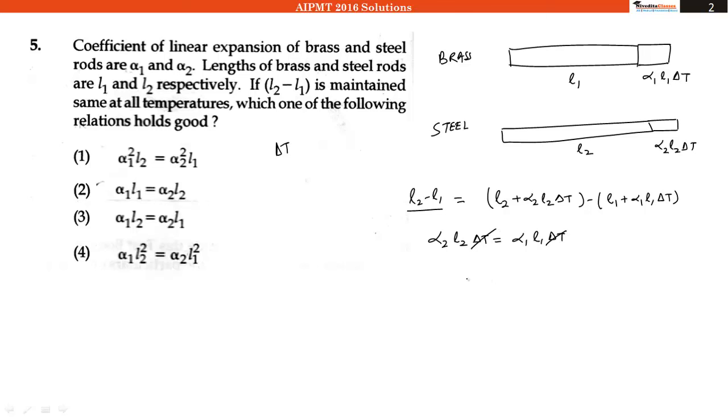And now cancel out this delta T from both sides. So what we have is alpha 2 L2 is equal to alpha 1 L1, which is our option number 2 and this is the correct option. Clear?